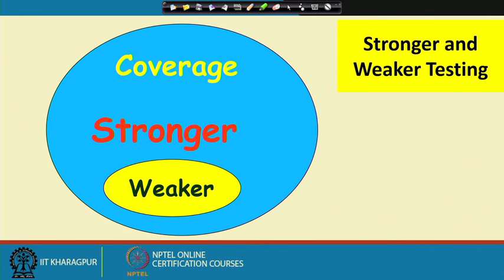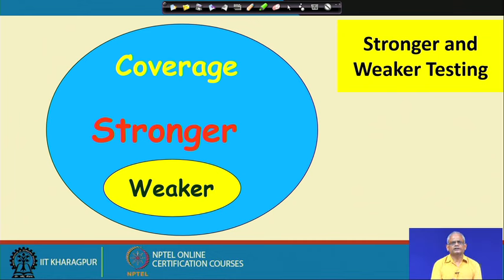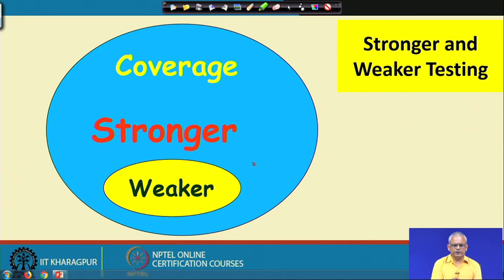Different testing techniques cover certain program elements. A stronger testing covers all the elements that have been covered by a weaker testing. If you are doing a stronger testing, the program elements executed include those of weaker testing — weaker testing is not necessary and is ensured automatically by stronger testing.